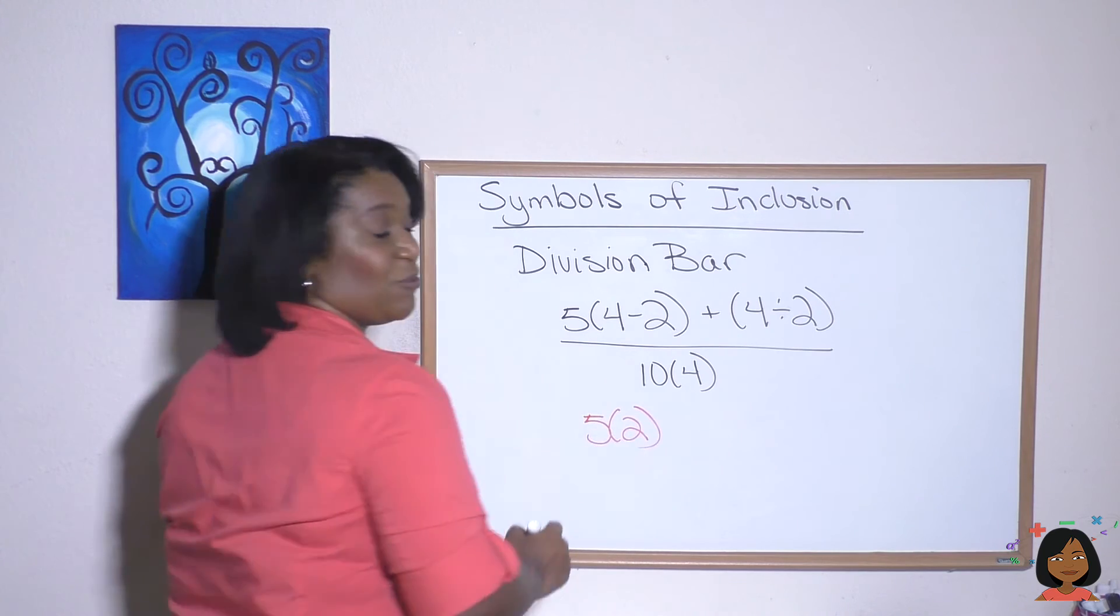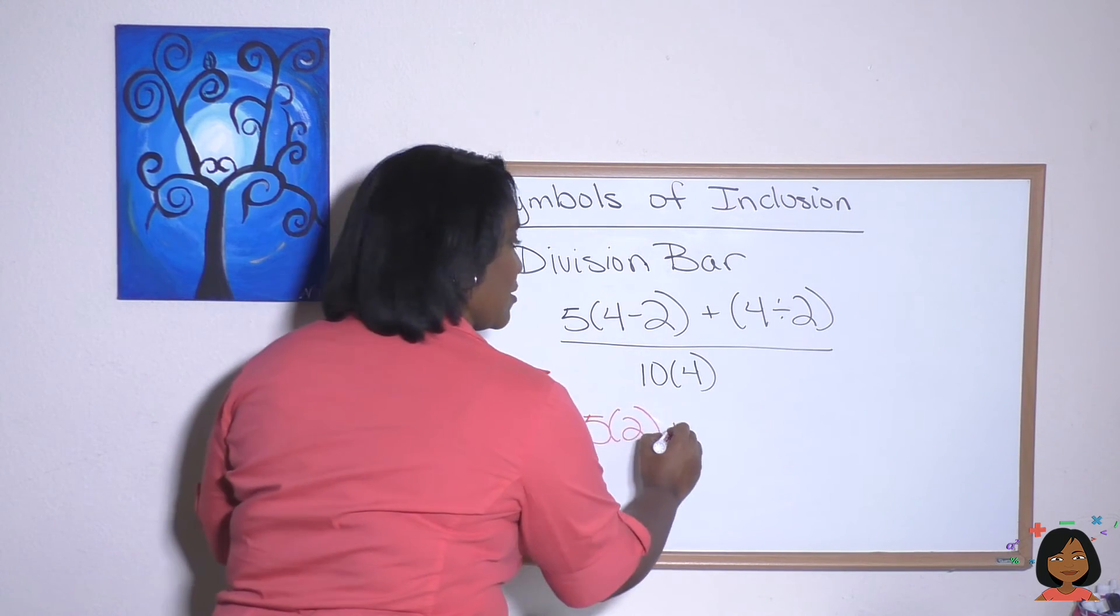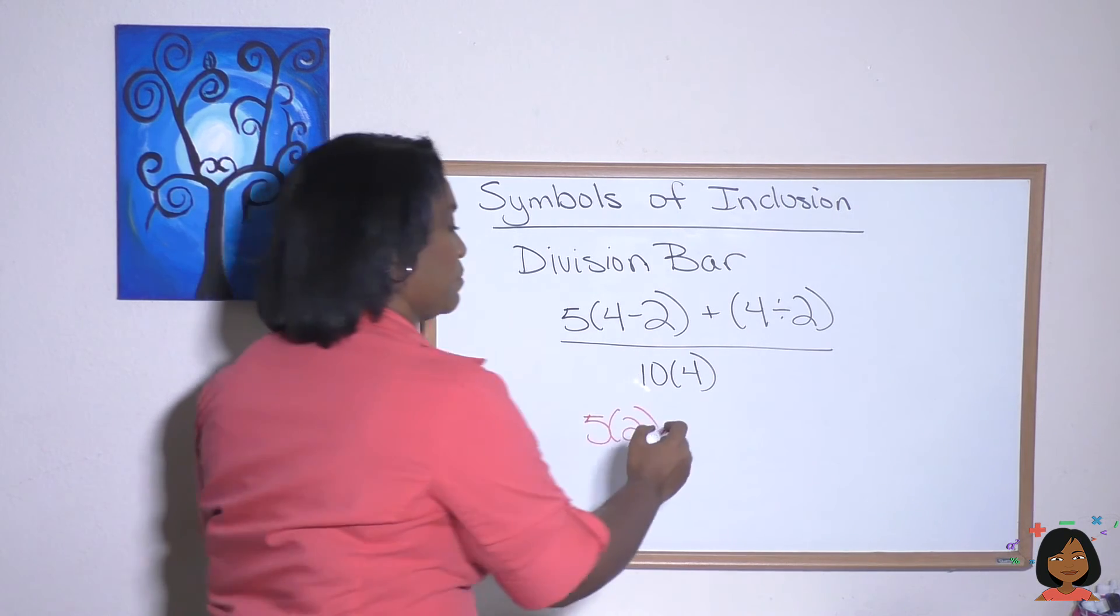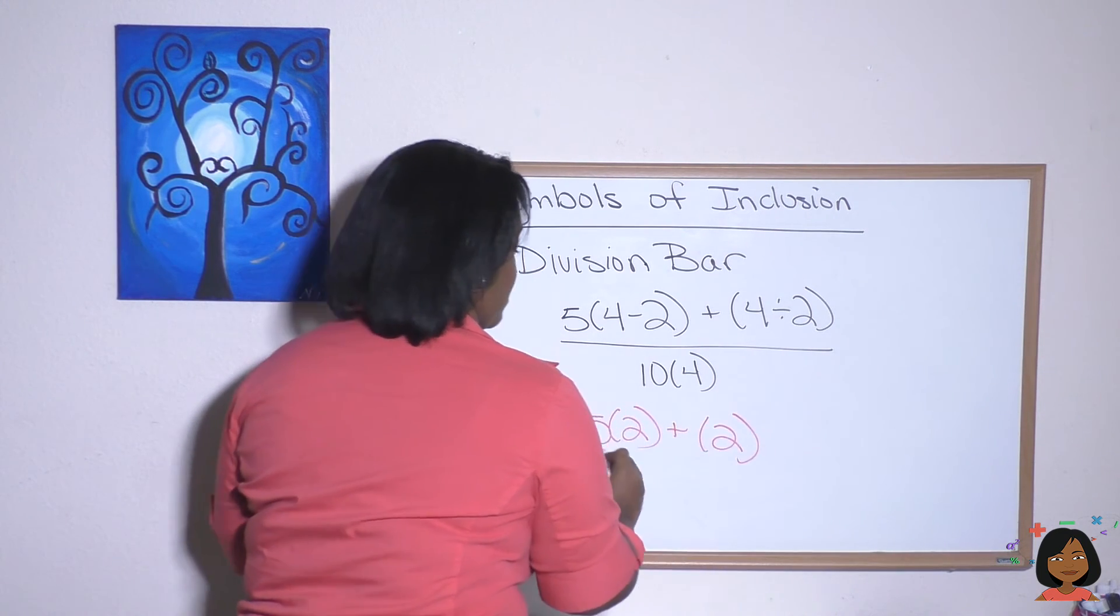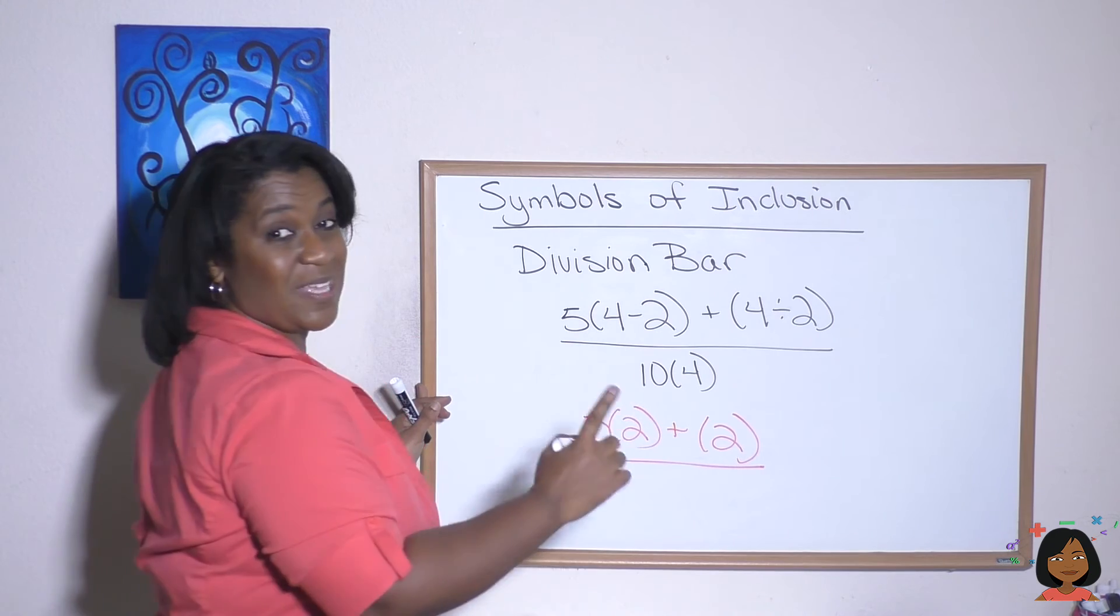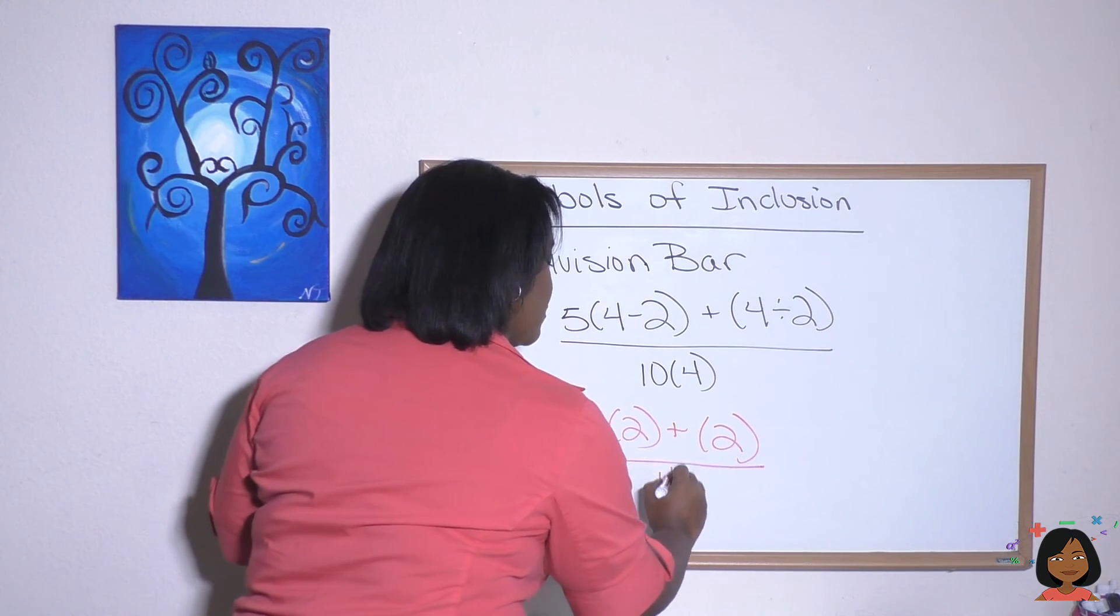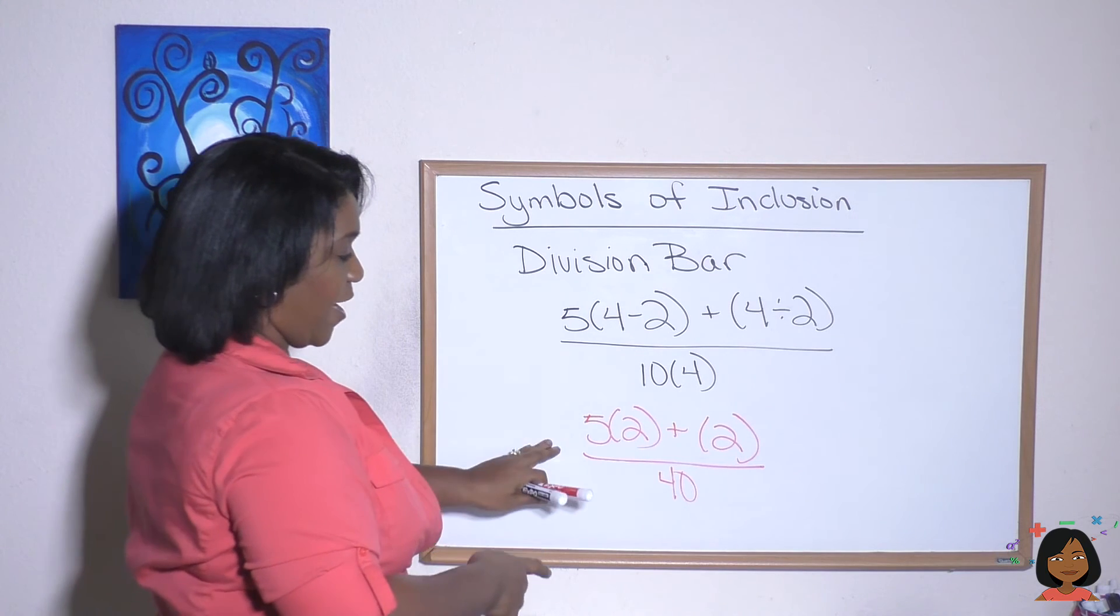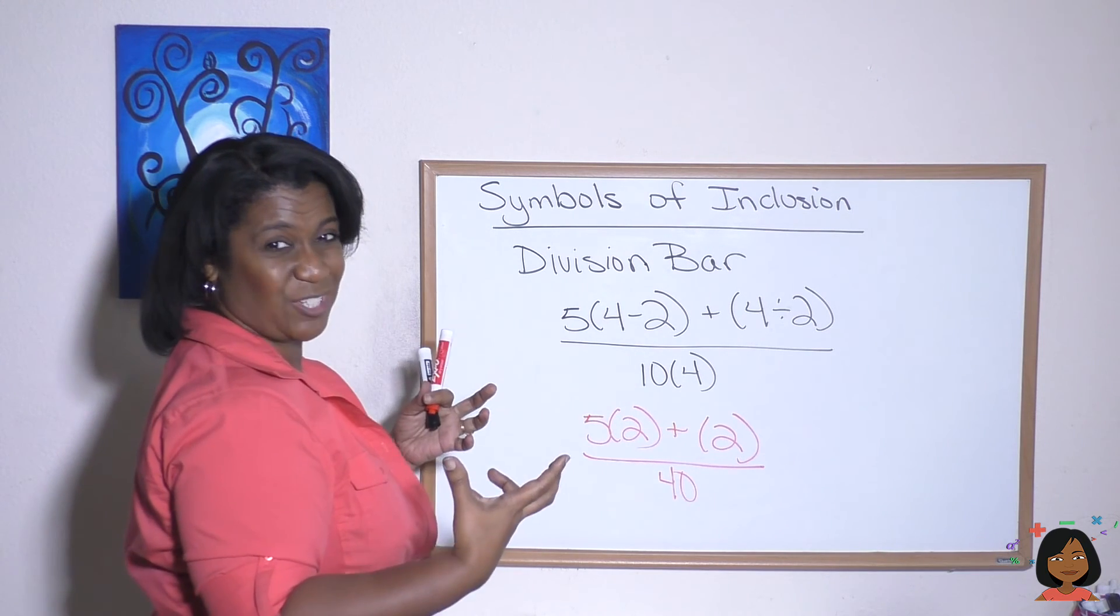We have 5 times 2 plus, and 4 divided by 2 is in the parentheses, so let's work it: that is 2. Let's do the bottom: 10 times 4 is 40.